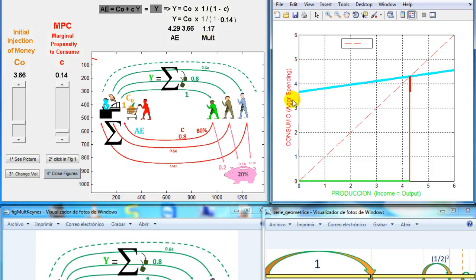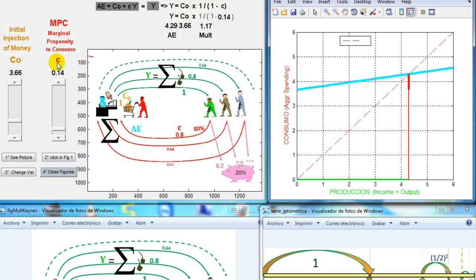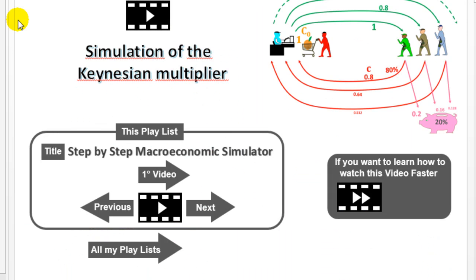So we can see how the intercept and the slope changes when we change this value. That's it. See you in the next video. Thank you for watching.